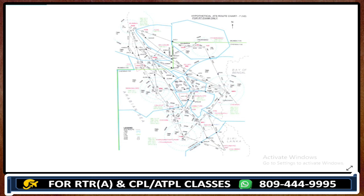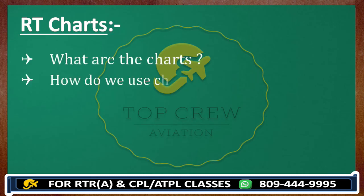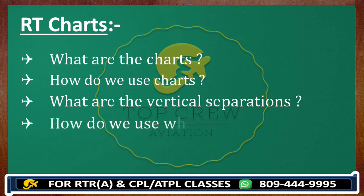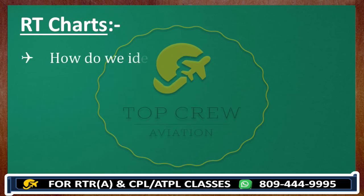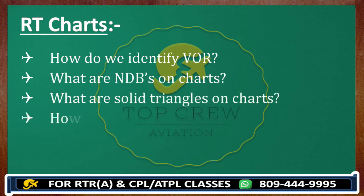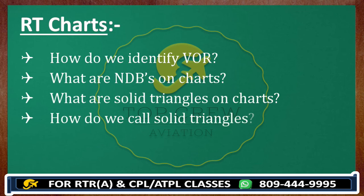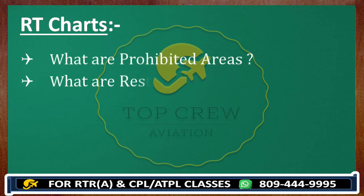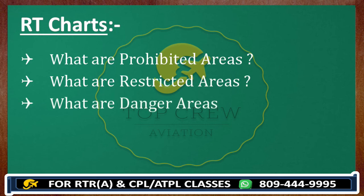I hope you have understood in a proper manner what the charts are and how we use them — what the vertical separation is, how we use charts during transmission, how we identify VOR, NDB, solid triangles, and what we call them. And now we know how to identify prohibited, restricted, and danger areas. We know the vertical separation, so we know almost everything about charts.